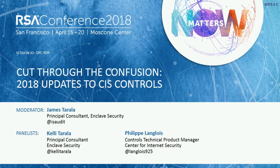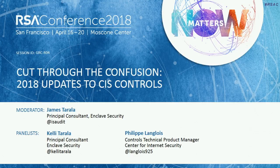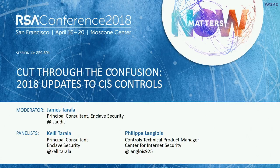A lot of you have had an opportunity to understand what the CIS Controls Project is all about, so we're not going to take a lot of time on background this morning. We want to get into the details and talk about some of the updates to version 7. The main thing that this project has tried to do over the last 10 years is provide feedback to the community on what are the things you can do to actually stop attacks. We're not trying to give you a comprehensive framework for security, but we are trying to give you advice on what are the very specific technical things you can do to stop attacks.